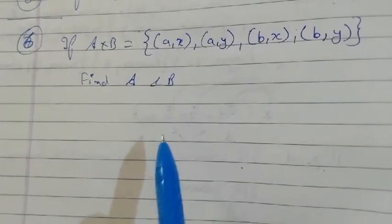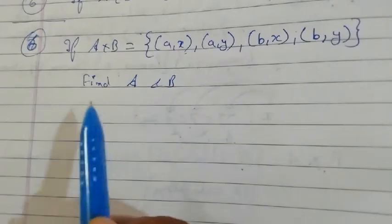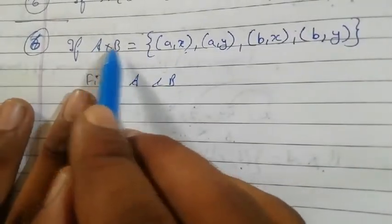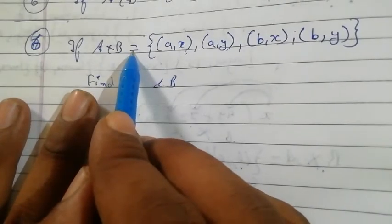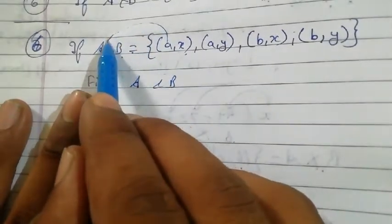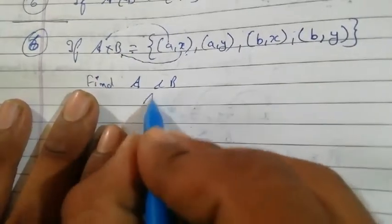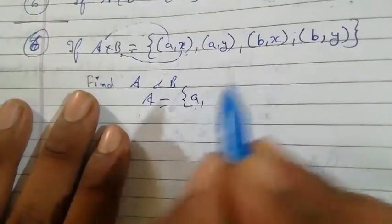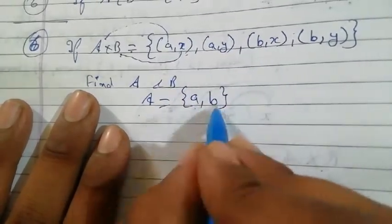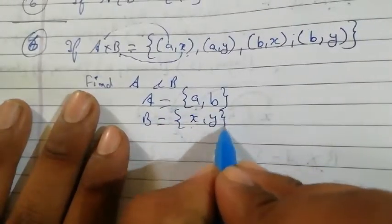Here is an important question where the product A×B is already given and we have to find the unique sets. In the product A×B, the first element belongs to set A and the second element belongs to set B. So the elements already written in first position form set A, and X and Y are elements of set B.